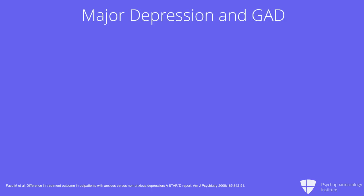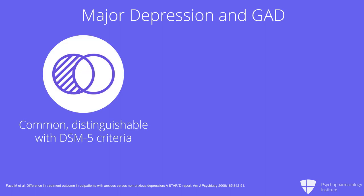The next comorbidity is major depression, which as I suggested is quite common. There is some overlap of the criteria for GAD, but studies have shown you can clearly delineate who has GAD, who has depression, and who has both, if you work carefully with the DSM-5 criteria. You might hope to kill two problems with one drug, but unfortunately that's not what the evidence supports.